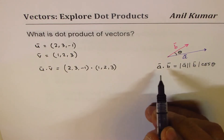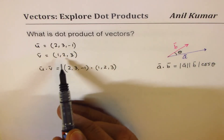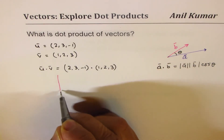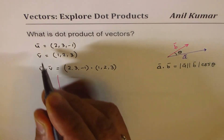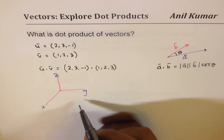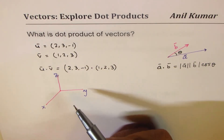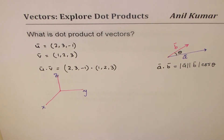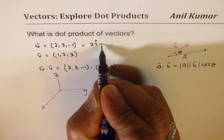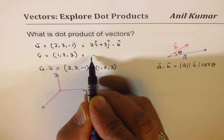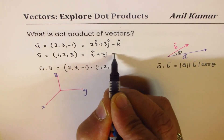So that is the definition of dot product. When I write (2, 3, −1) and (1, 2, 3), these are components along i, j, k — we are representing vectors in ℝ³, with components along the x, y, and z axes. You could write u as 2i + 3j − k and v as i + 2j + 3k.